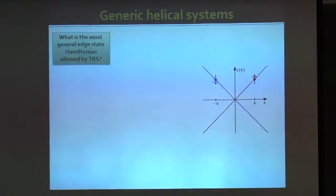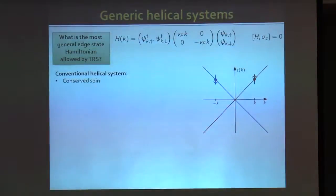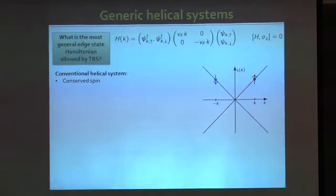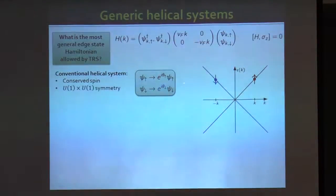We were interested in generalizing the concept of helical systems, investigating what we called generic helical systems. The question was: what is the most general edge state Hamiltonian allowed by time reversal symmetry? The conventional helical system has right movers with spin up and left movers with spin down. This Hamiltonian commutes with the sigma-z Pauli matrix, so it conserves both time reversal symmetry and spin, giving it a U(1) × U(1) symmetry — you can multiply psi-up and psi-down operators by two independent phases.